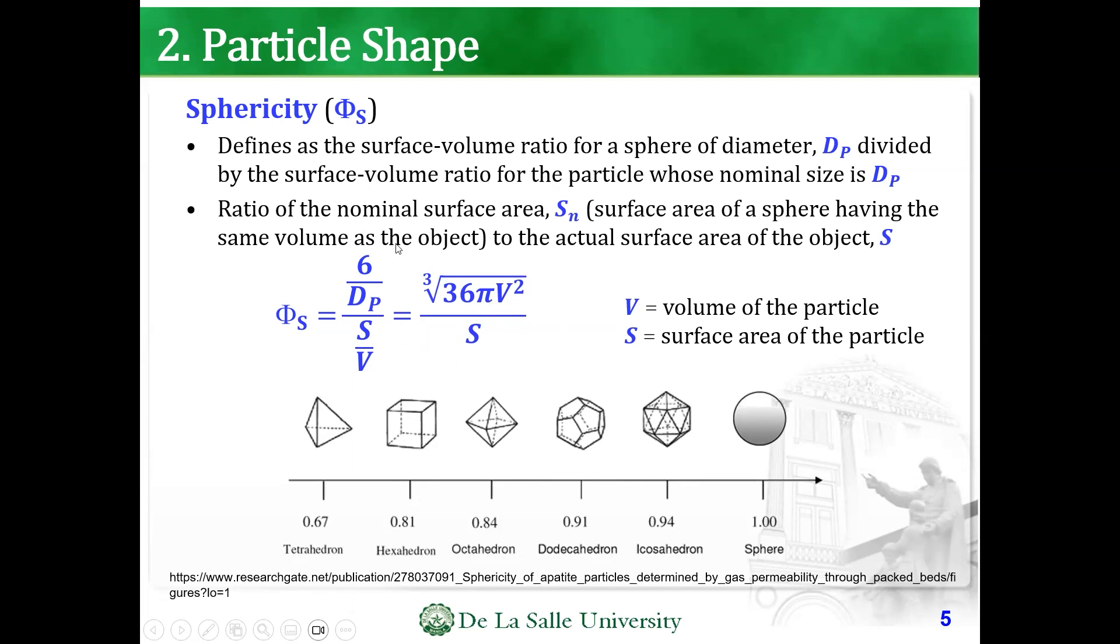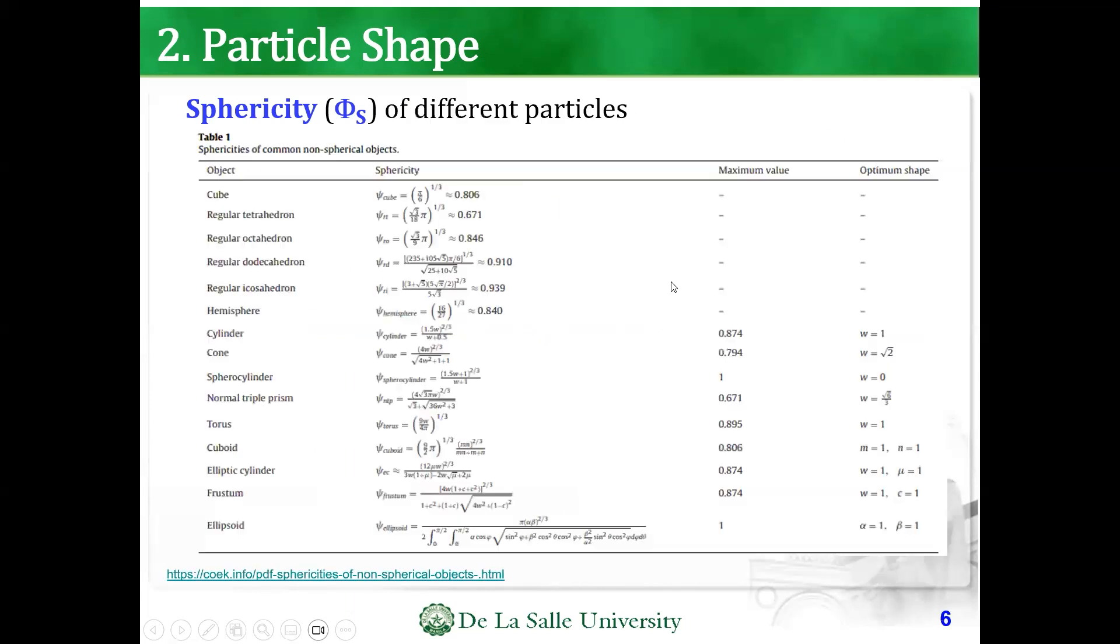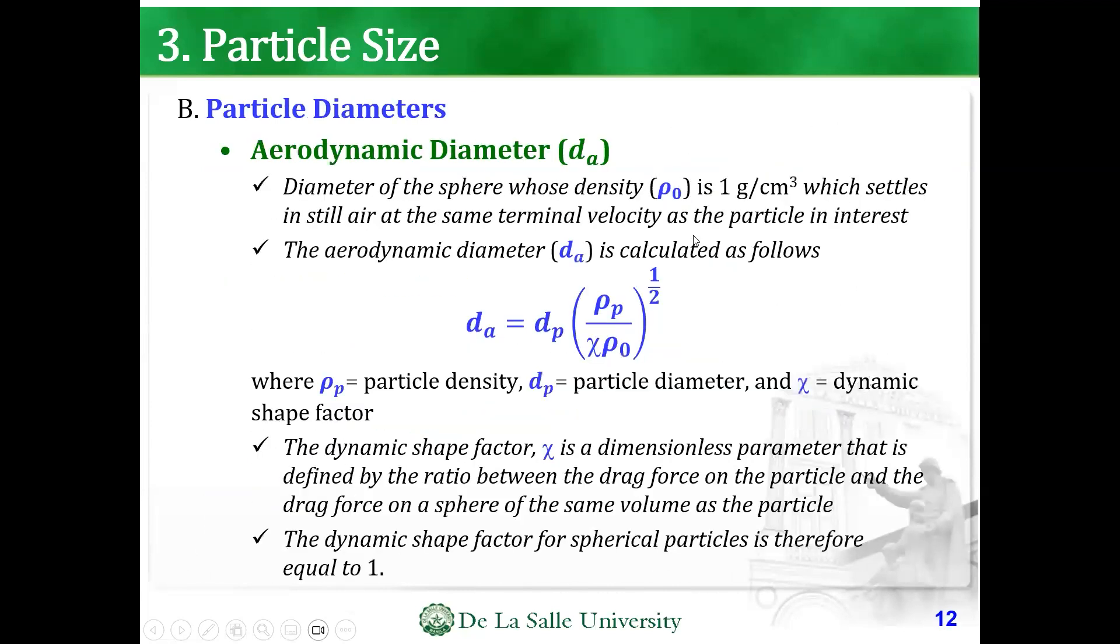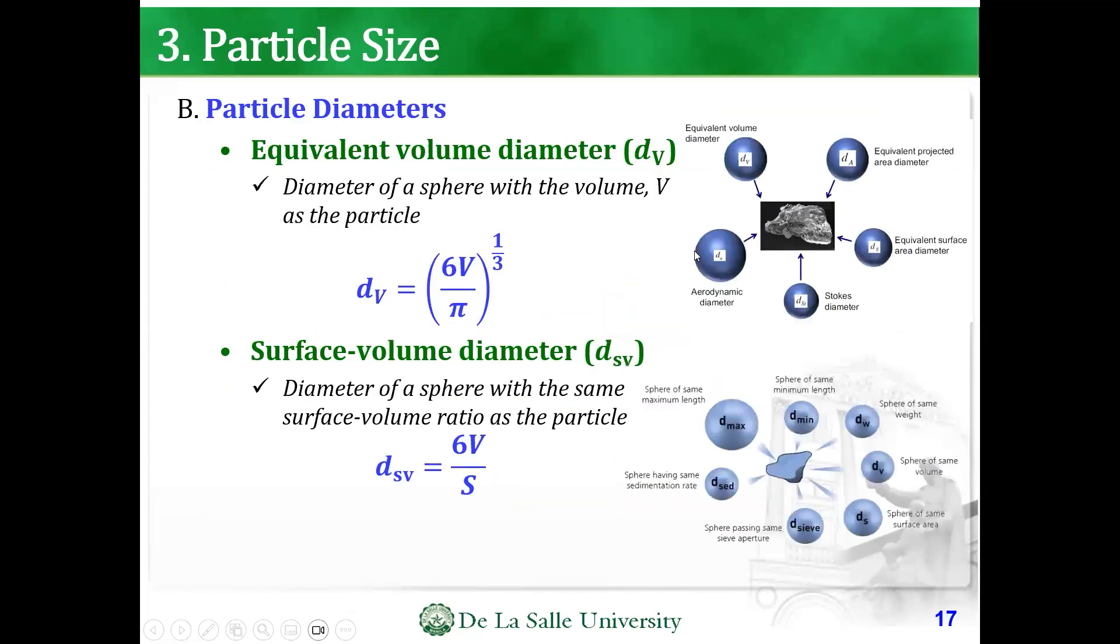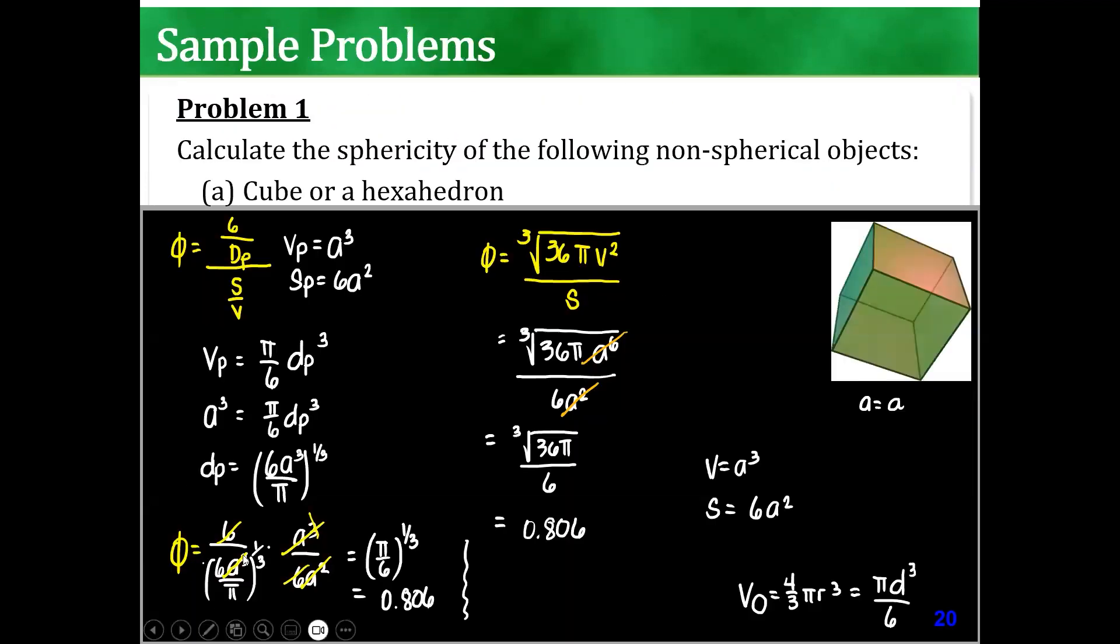So, some of you in the test, you might ask, Sir, is it possible to just use the one on the right because it's easier? Yes. But, the one on the left, sometimes, I will ask, what's the equivalent diameter? What's the equivalent sphere diameter? We solved this. The equivalent sphere diameter would be 6a cubed over pi raised to 1 third. But, they're the same answer. One, we just did direct substitution. Of course, direct substitution is easier, of course.